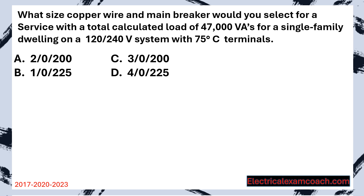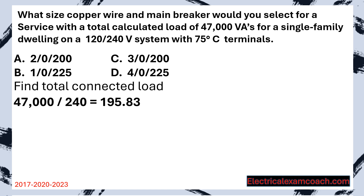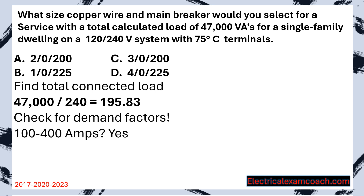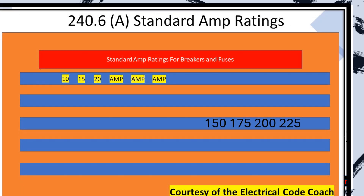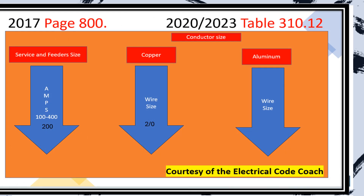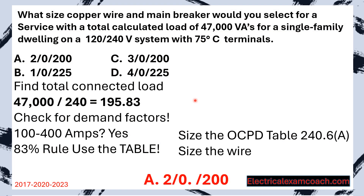What size copper wire and main breaker would you select for a service with a total calculated load of 47,000 VAs for a single family dwelling on a 120-240 volt system with 75 degrees C terminals? Step one: find our total connected load — they've given it to us, but we divide to get our amperage. We check for demand factors: is this between one and 400 amps? Yes. Single family dwelling? Yes. So the 83% rule applies. We size our overcurrent protective device using table 240.6A — we have a 196 amp known load, choose the next size up: 200 amp breaker. Then we head to the cheat sheet table, find the 200 amp row on the left, slide to the copper column, and find that we need 2 AWG copper. So the answer is 2 AWG copper on a 200 amp service.